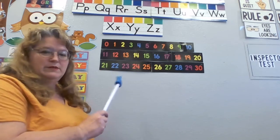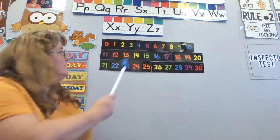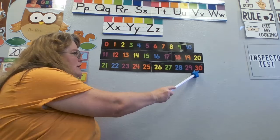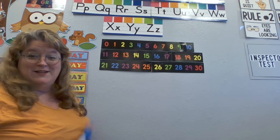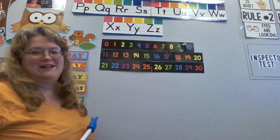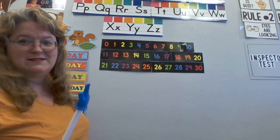and then we'll sing the ABCs, okay? Here's our numbers. We're gonna count from 0 to 30, right? 0 to 30, because you need to know that for kindergarten. Alright, ready, set, go!